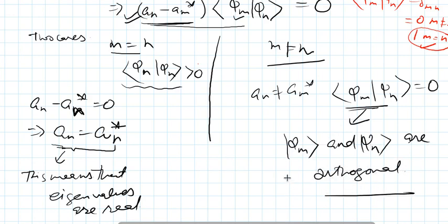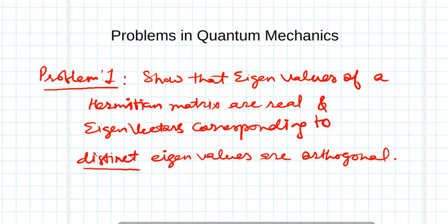Hence we have arrived at the conclusion that eigenvalues of a Hermitian matrix are real, and eigenvectors corresponding to distinct eigenvalues are orthogonal. The first part is proved in case one and the second part is proved in case two. Thanks for watching this lecture. In the next video I will solve many more problems.